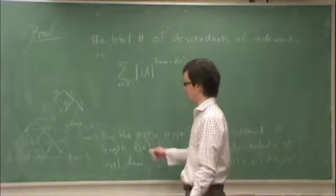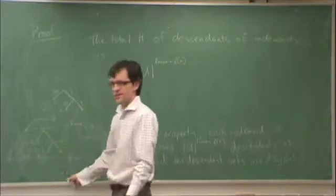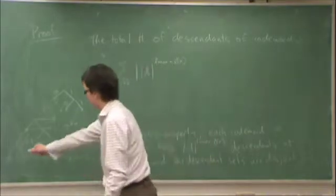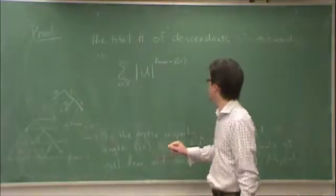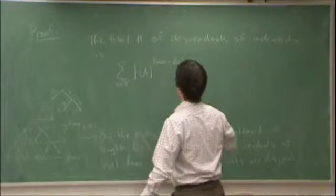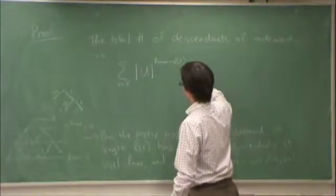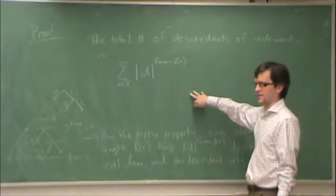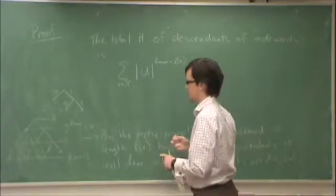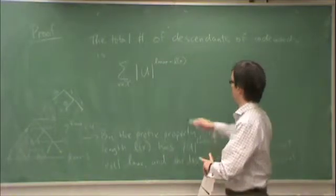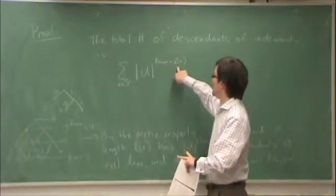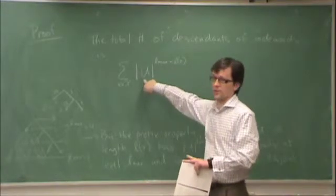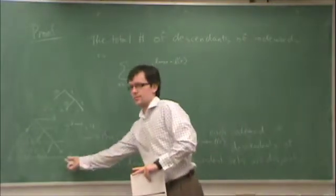So remember that a descendant can either be a codeword, a descendant of a codeword, or neither. So what's the total number of descendants at level Lmax? It's cardinality of u to the Lmax. So this counts the set of all descendants that are either descendants of a codeword or themselves codeword. If Lx equals Lmax, then this exponent is 0, so that's 1. There's only one descendant of a node at the bottom level.